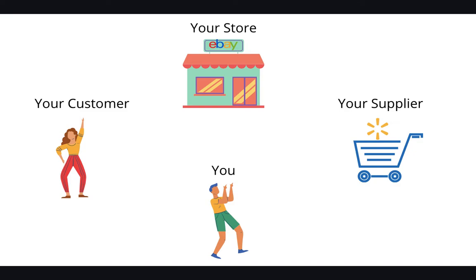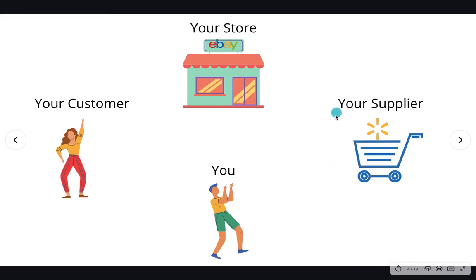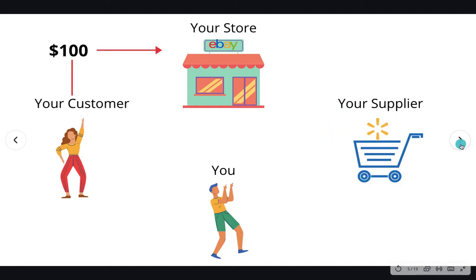If you didn't get that, no worries. I'm going to break this down in very simple steps so that you can all understand what is eBay dropshipping. First of all, you're going to have your store — your eBay account. As every business, you need your customers. This is going to be you behind the store managing everything. And you need a supplier, which is the place where you're going to be grabbing your items, your listings from. In this case, we're going to use Walmart as an example.